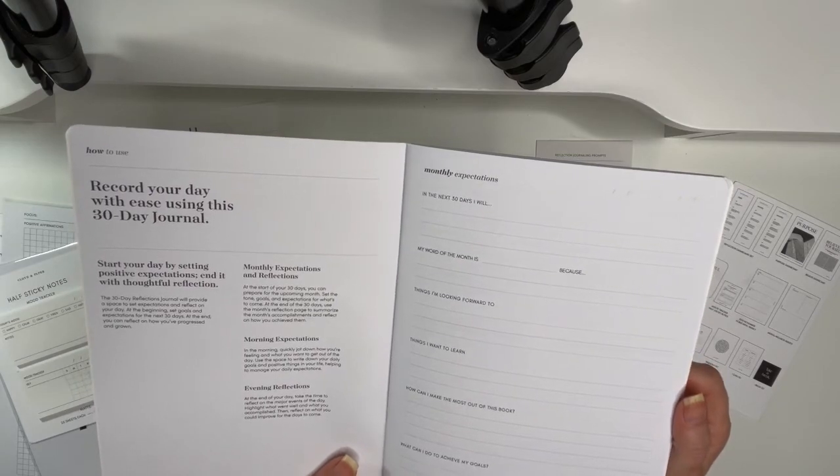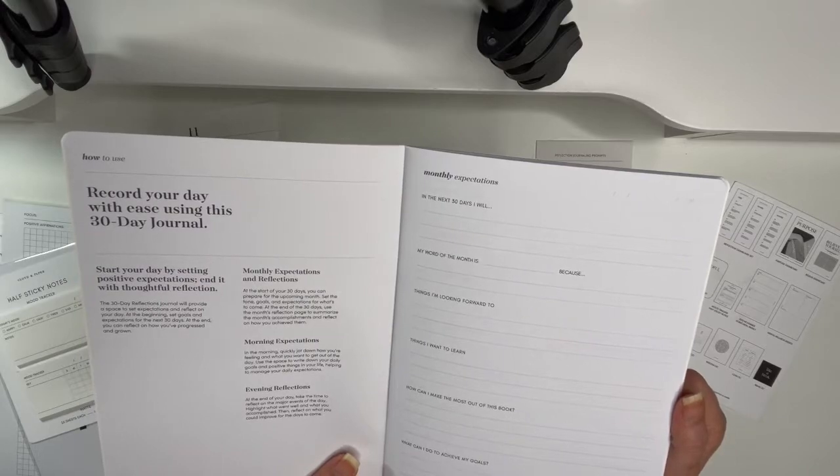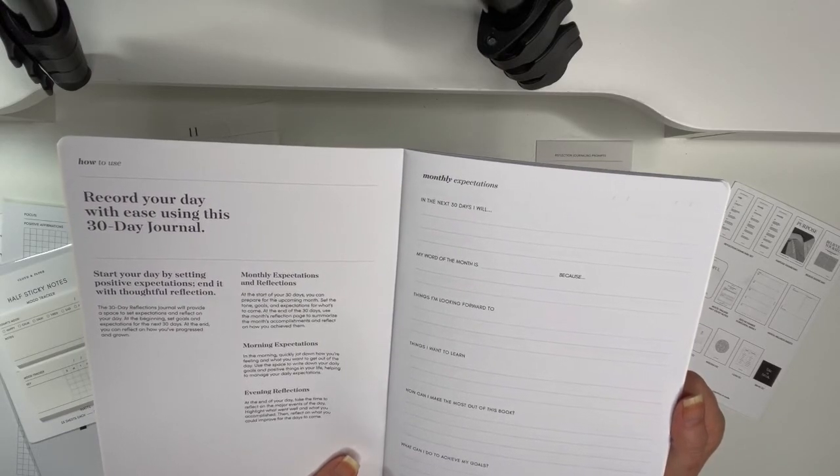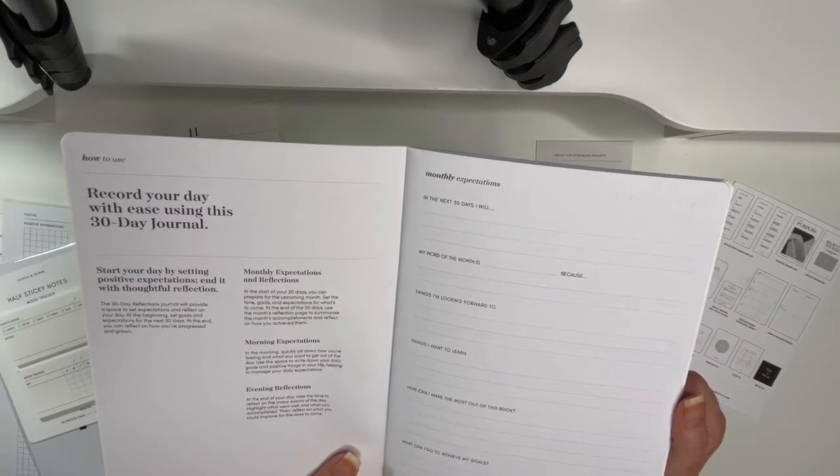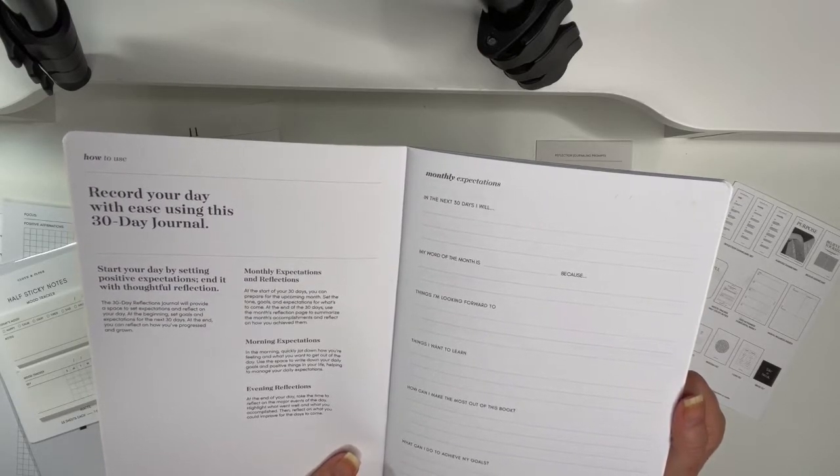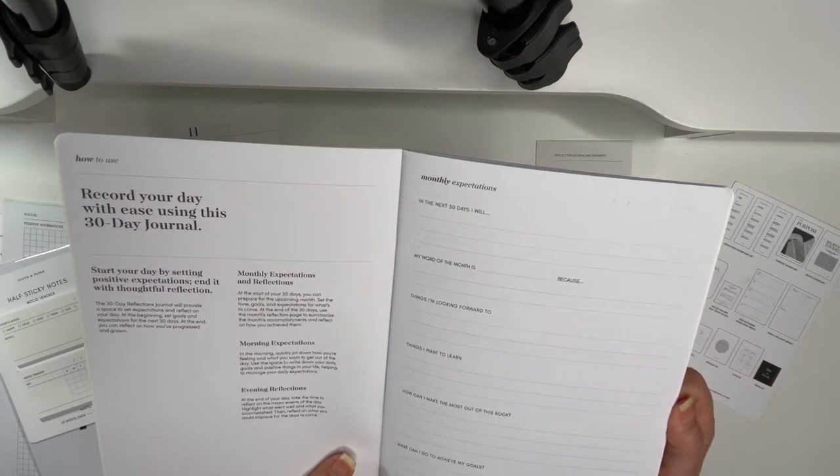Record your day with ease using this 30-day journal. Start your day by setting positive intent, positive expectations, end it with thoughtful reflection. This 30-day reflections journal will provide a space to set expectations, reflect on your day. At the beginning set goals and expectations for the next 30 days, and at the end you can reflect on how you've progressed and grown. That's pretty cool.